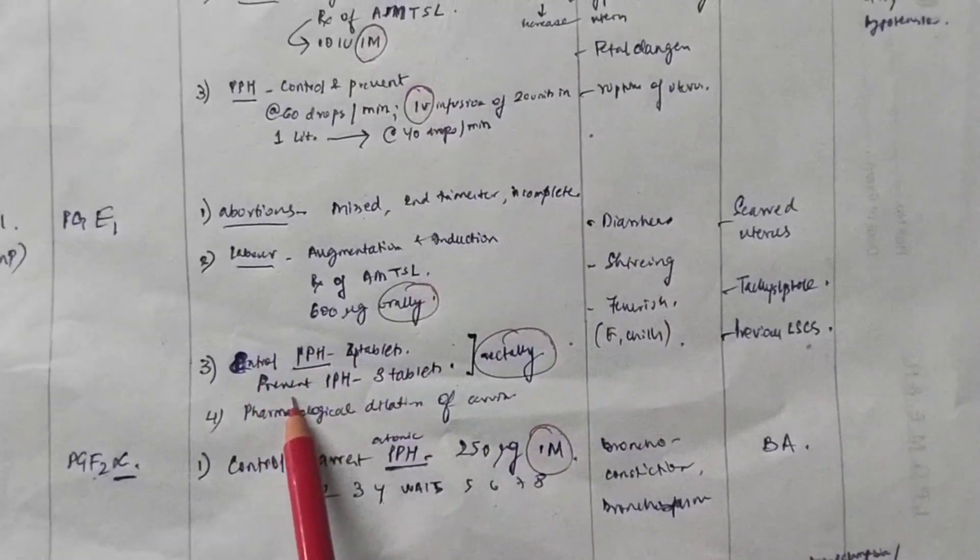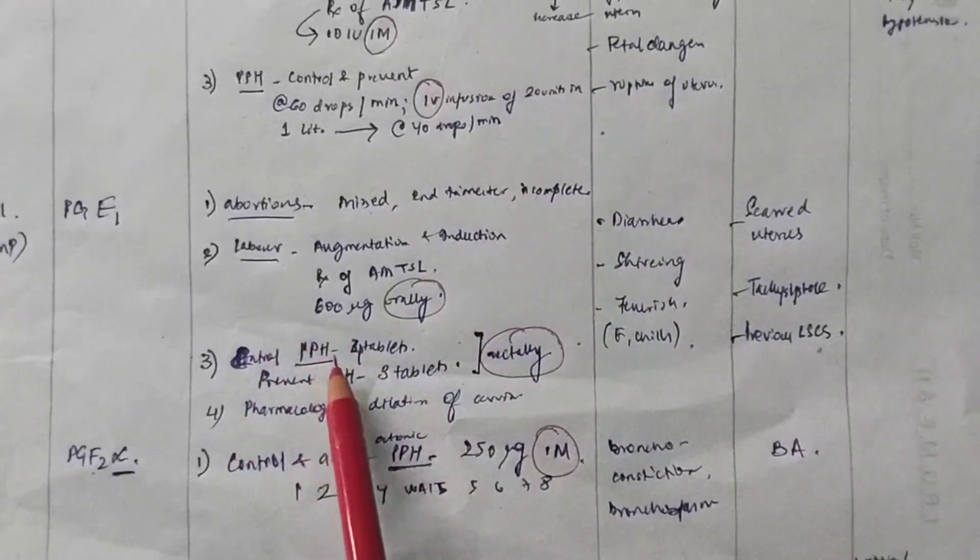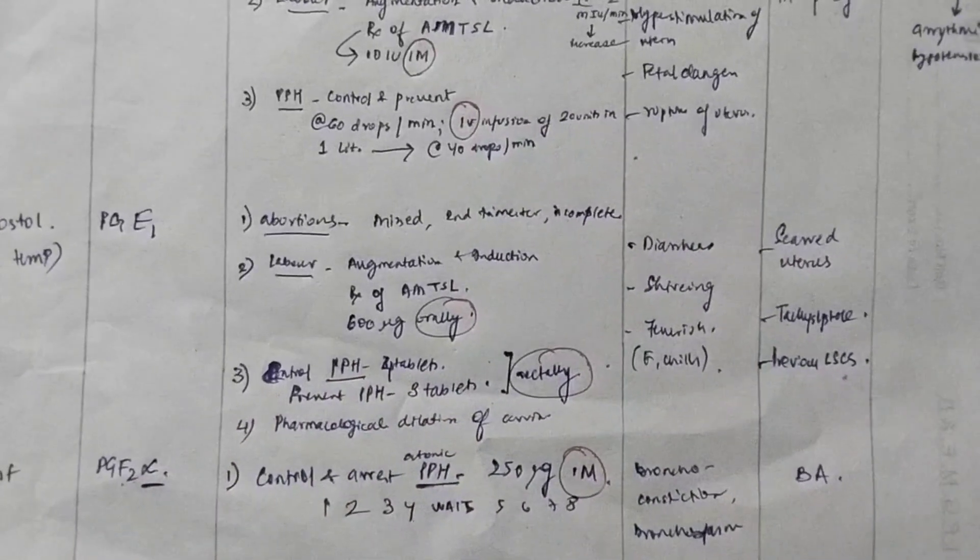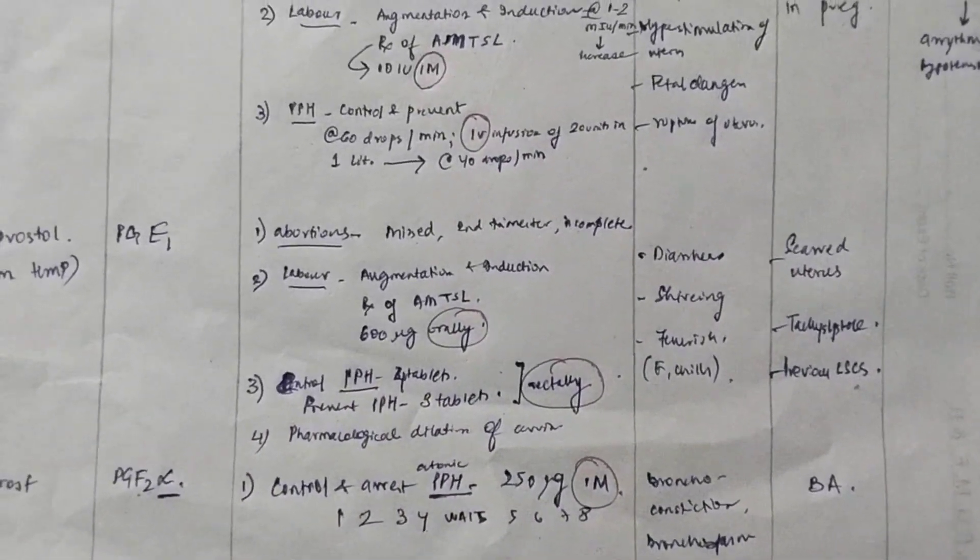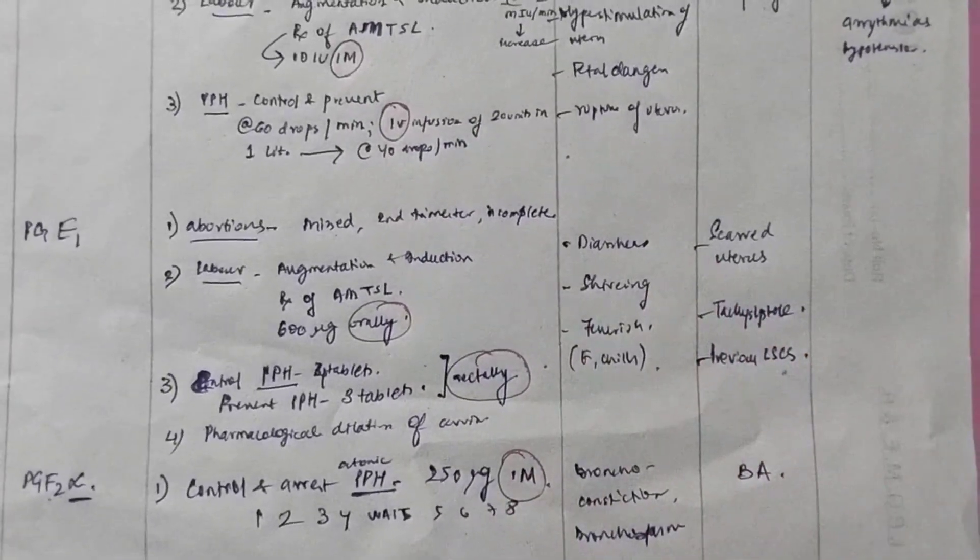They are also used in controlling PPH, preventing PPH. If you prevent PPH, three tablets rectally. Controlling PPH, four tablets rectally. And you have to give it rectally. Now, how many micrograms in tablets? Basically, one tablet has 200 micrograms of misoprostol.